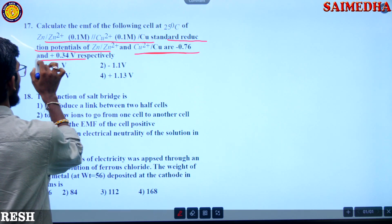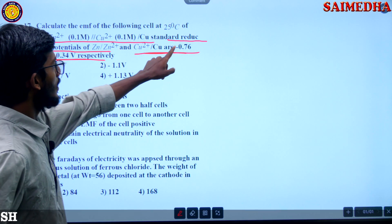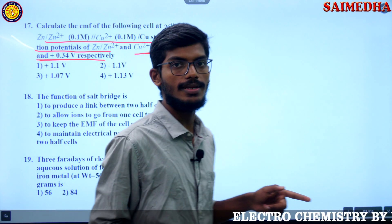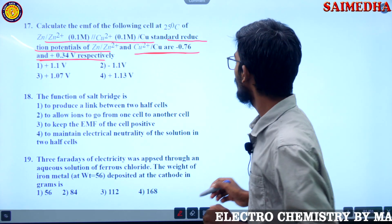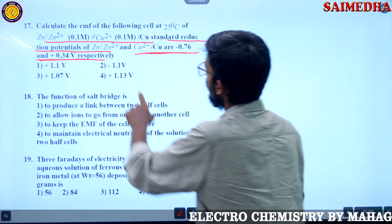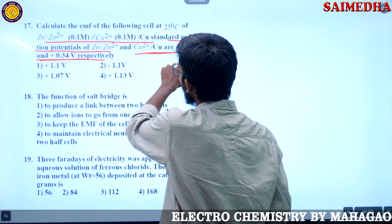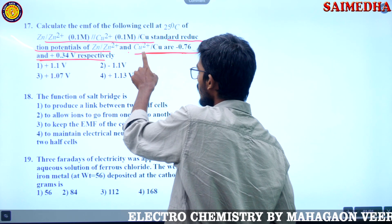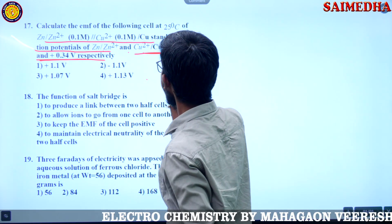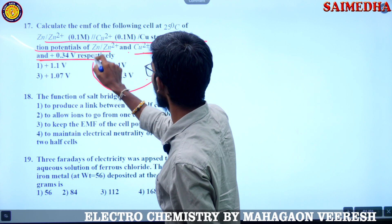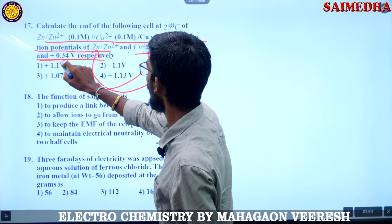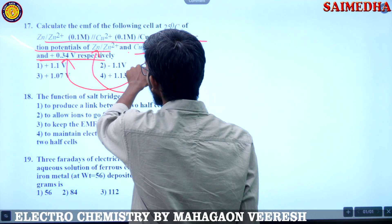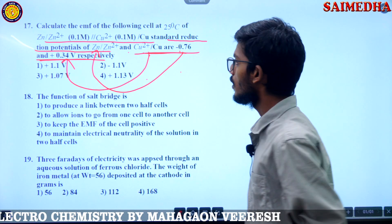The reduction potentials are: minus 0.76 for zinc and 0.34 for copper. So minus 0.76 belongs to zinc and 0.34 belongs to copper.